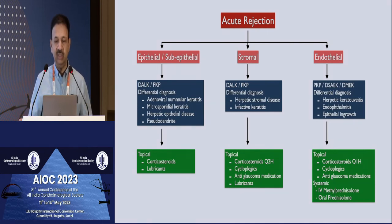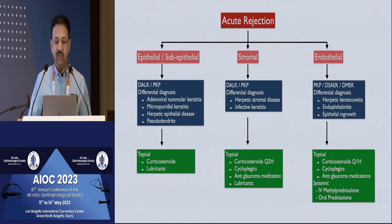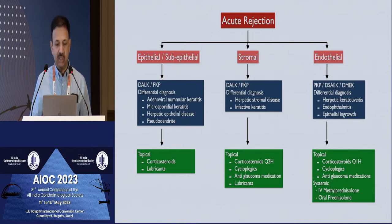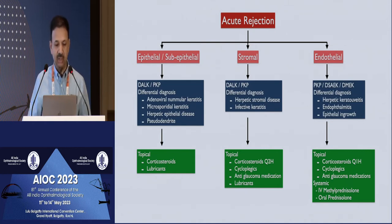There is a chart depicting all the rejections: epithelial, sub-epithelial, stromal, and endothelial rejection. The epithelial and sub-epithelial types are easier to treat and don't affect the overall health of the corneal graft. However, they are sometimes misdiagnosed as adenoviral or Thygeson's keratitis, and while the treatment remains the same, it's important to differentiate from other conditions like microsporidial, herpetic, or even a pseudodendrite.